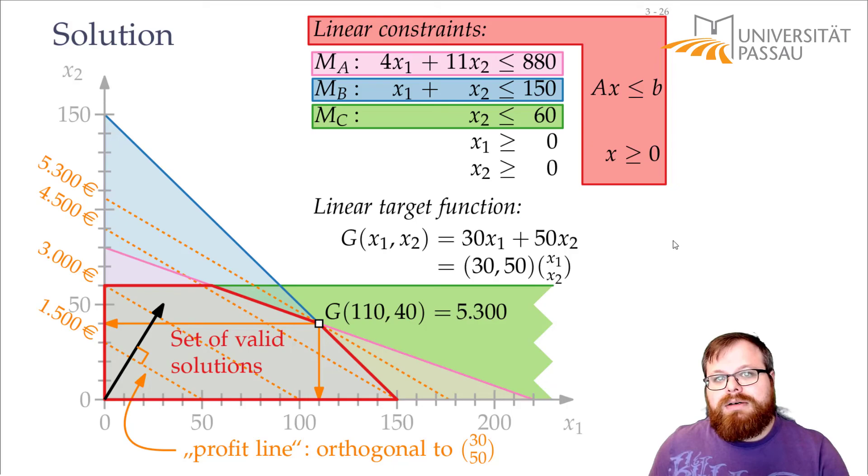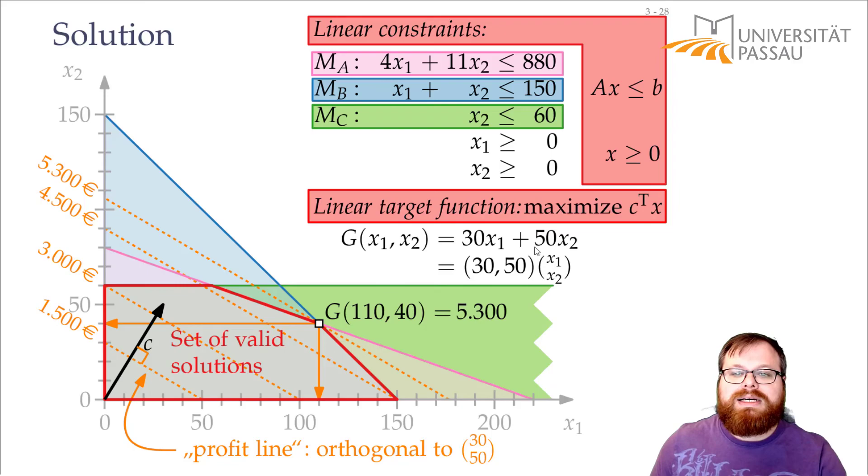And our target function, that's similar, we want to multiply some value times x1 plus some value times x2, and so on. So we want to multiply some vector with x. And here we want to maximize the target function that's defined by our vector c times x. Here the vector c would be 30 and 50, or this vector 30, 50 times the vector x1, x2.